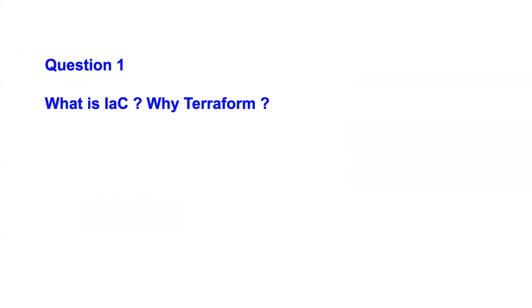First question: what is IaC and why Terraform? IaC is Infrastructure as Code — it's the process of managing or creating infrastructure using code rather than through a manual process, so you automate your infrastructure using IaC. Terraform is one of the popular IaC tools available. There are other IaC tools as well: for AWS you have CloudFormation templates, for Azure you have Resource Manager, for OpenStack you have Heat templates. But the primary purpose of using Terraform is that it works on the principle of API as code.